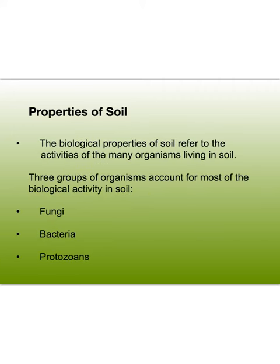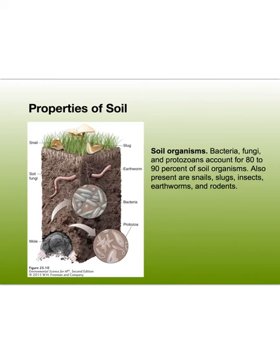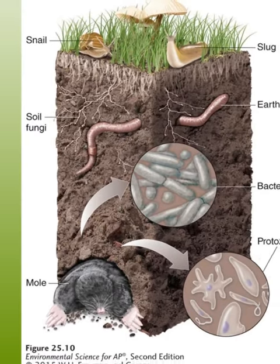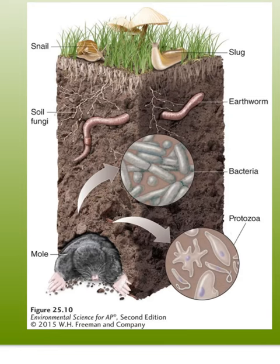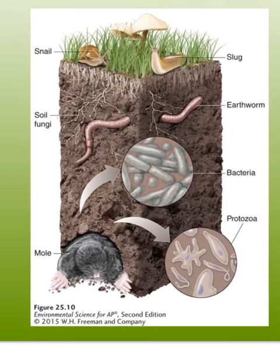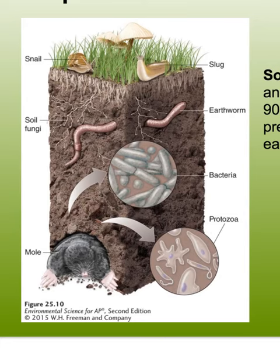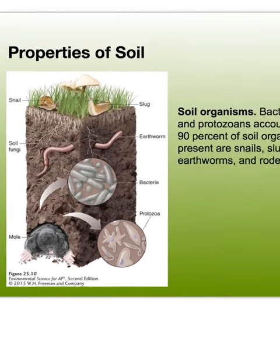Biological properties of soil refer to the activities of organisms there. Three types to know: fungi, bacteria, and protozoans. Remember that soil is living — not just the inorganic material and organic molecules, but also the organisms inside that help move chemical processes along. There's a video representing these living processes happening in soil.